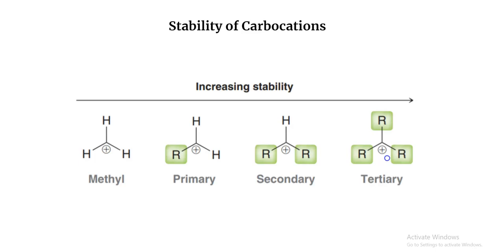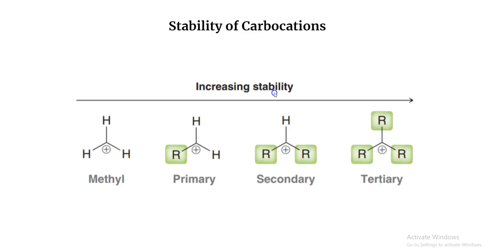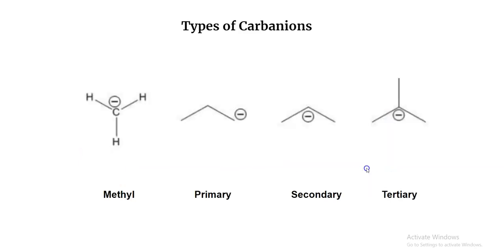Now we know what carbocations are and the different kinds of carbocations. Let's talk about their stability. As you move from methyl to tertiary carbocation, the stability of these ions increases. We'll talk about the reasoning in a future session, but for now remember: methyl carbocation is the least stable and the tertiary carbocation is the most stable.